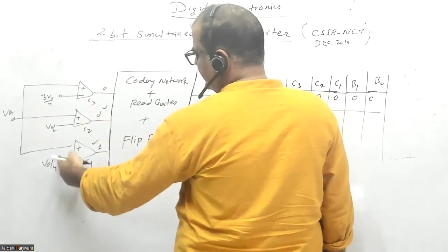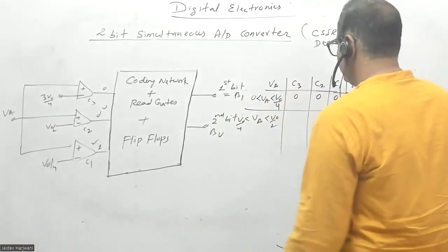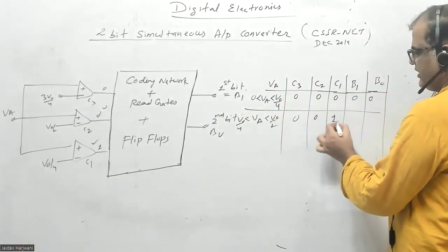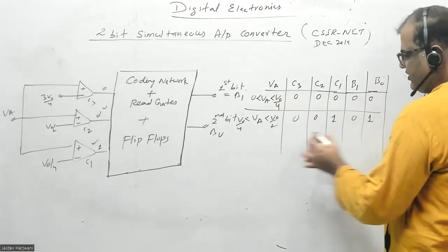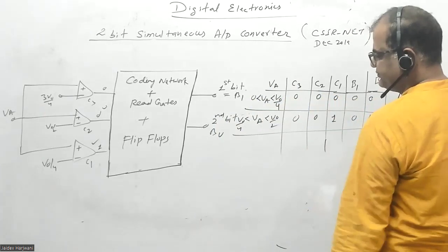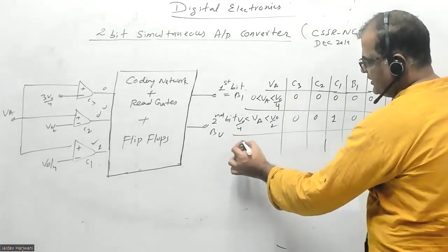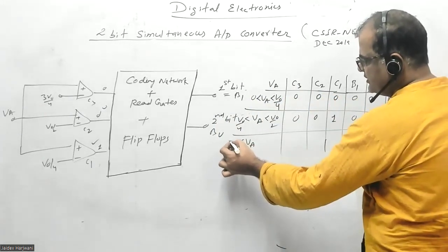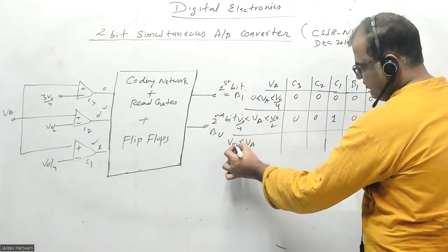Only the first is greater than V0/4, so this becomes 001, and I can code this as binary 01. Similarly, if the analog output VA is greater than V0/2 but less than 3V0/4...